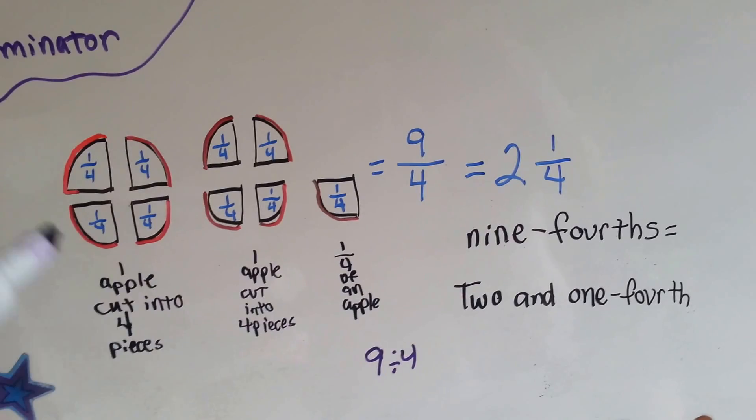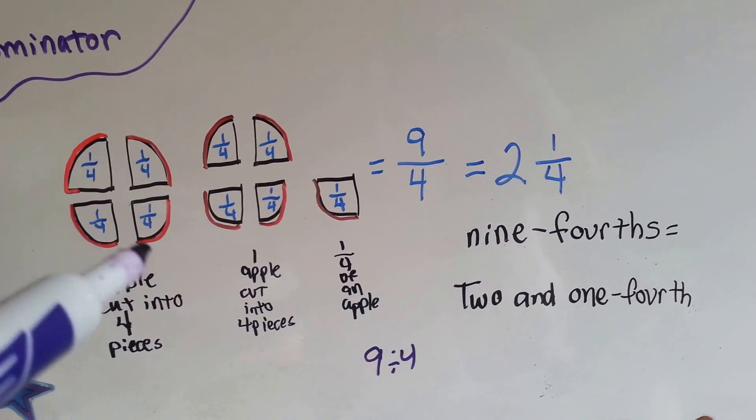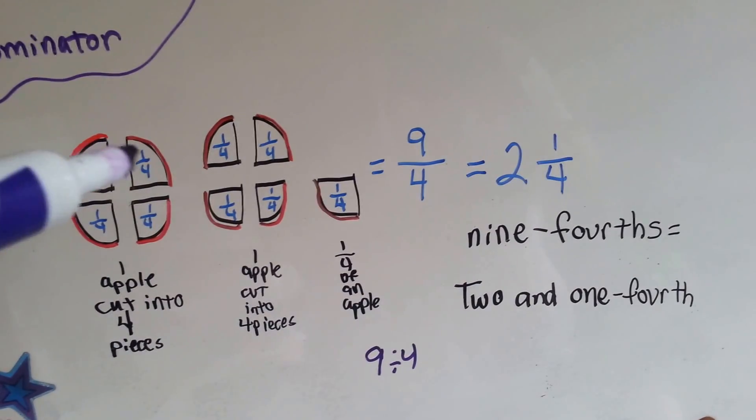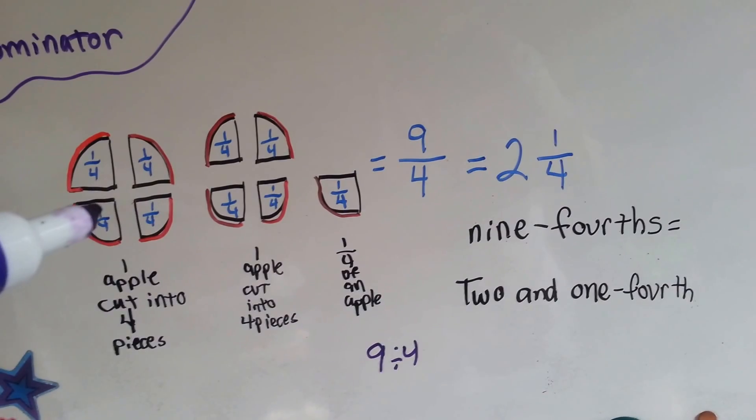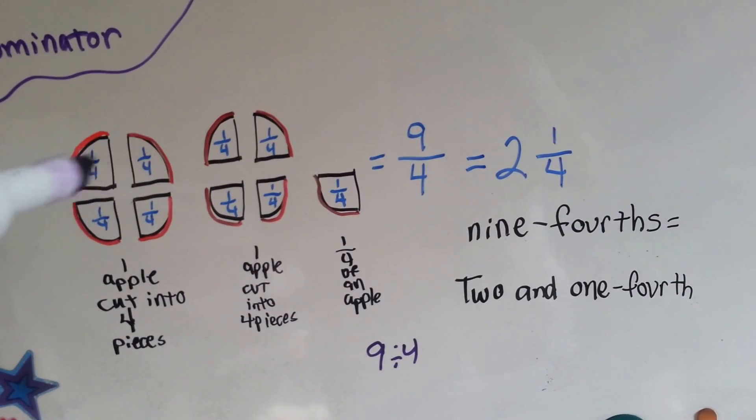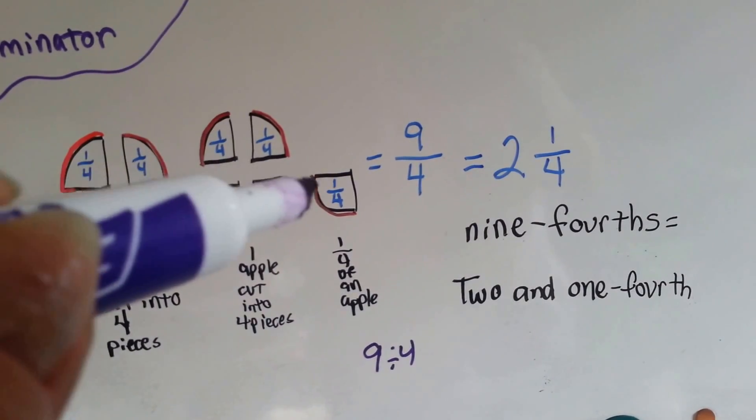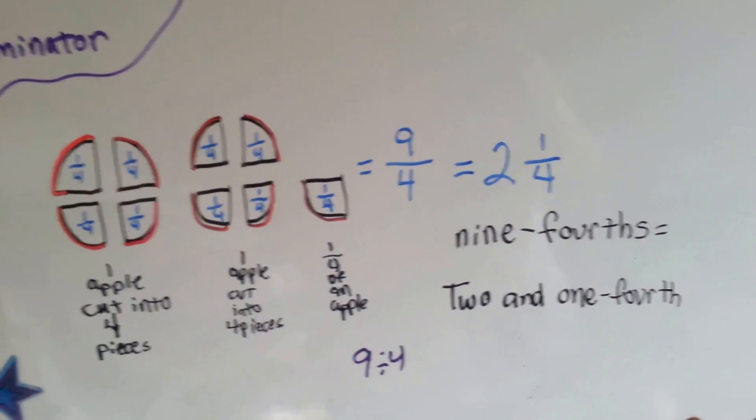Now, because they're each little fourth pieces, you take all these ones up here as numerators and you add them all together. One, two, three, four, five, six, seven, eight, nine fourths. Nine fourths.